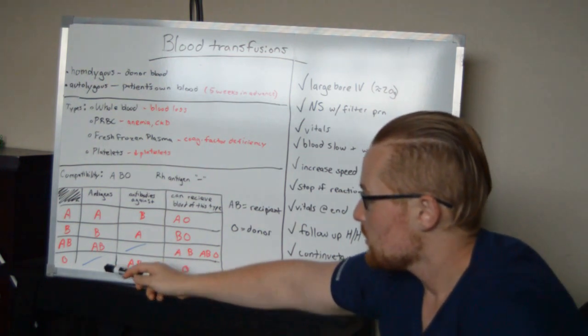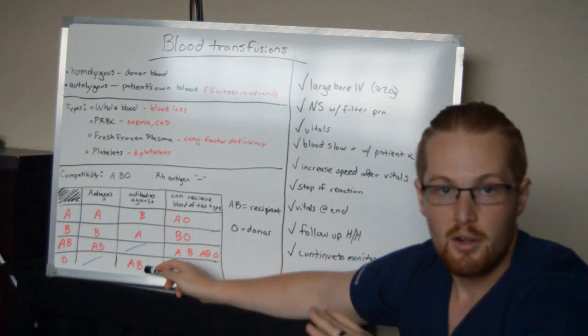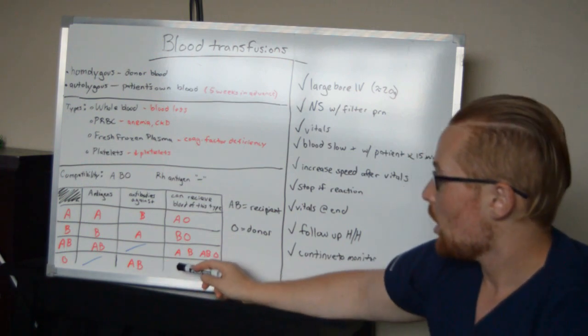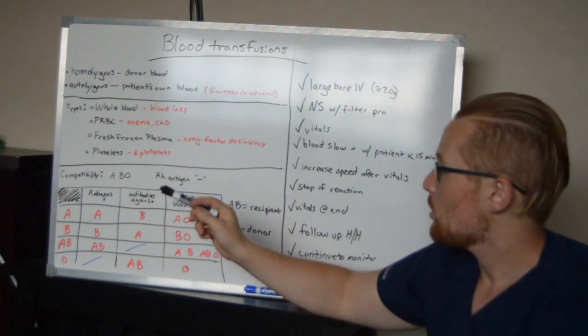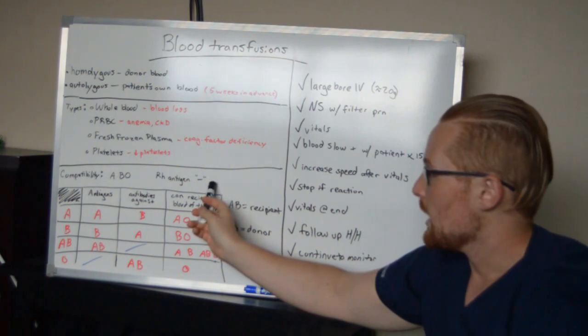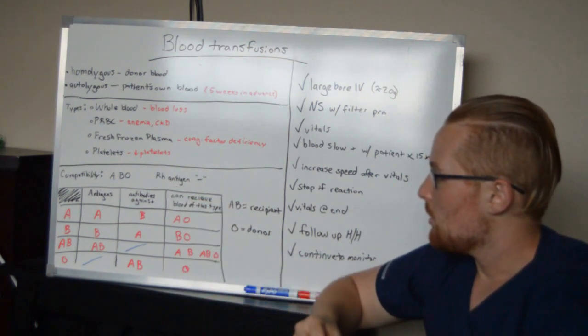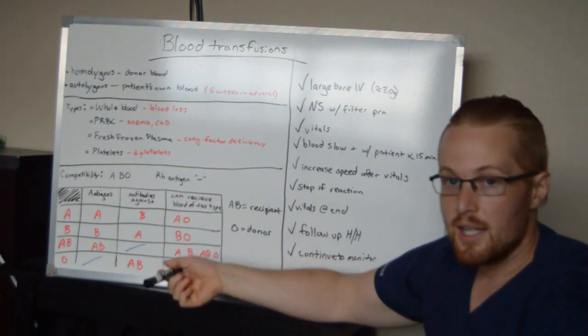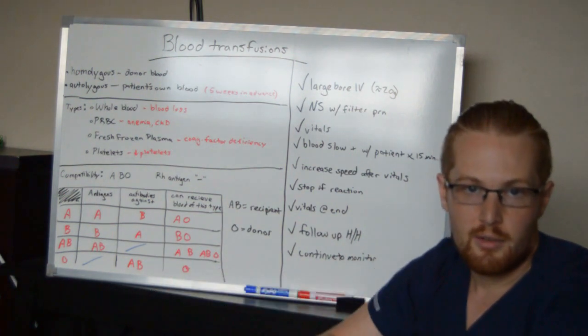Whereas O type, they have antibodies against every other type of blood, so O can only receive from O. So it's also important to notice whether they're positive or negative for the RH antigen, because if you are negative but you receive positive, then you can have reactions as well.